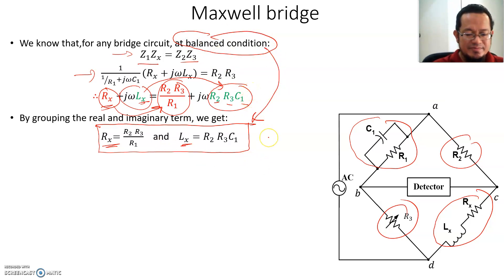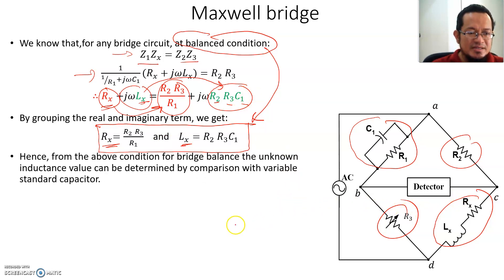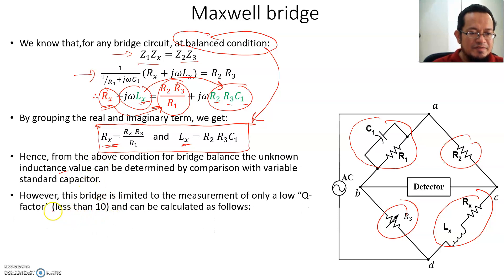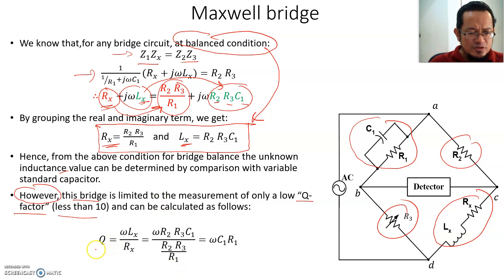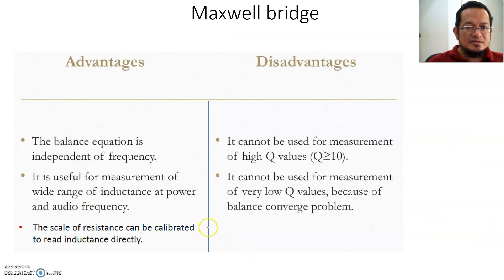For the bridge at balance, the unknown inductance and resistance can be determined by comparison with the variable standard capacitor. However, a new parameter to note: this bridge is limited to measurement of only a low Q factor — less than 10. The Q factor, or quality factor, is calculated as Q equals ωLX divided by RX, which simplifies to Q equals ωC1 multiplied by R1.